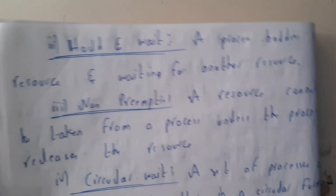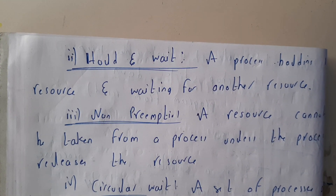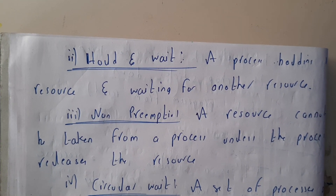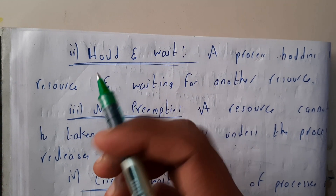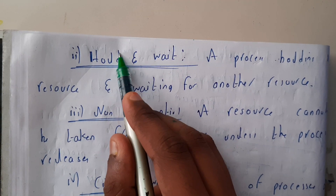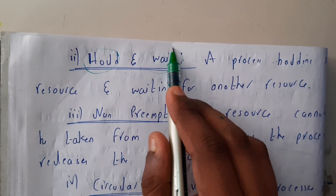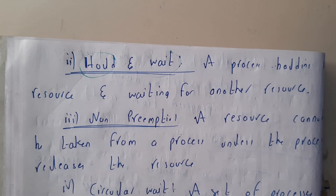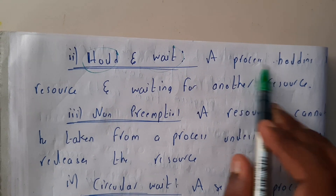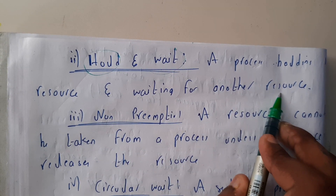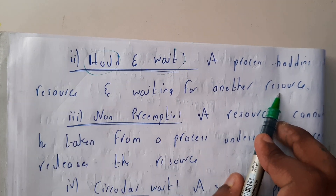The second reason is hold and wait — a process is holding a resource and waiting for some other resource, which causes deadlock. A process holding a resource and waiting for another resource causes deadlock.